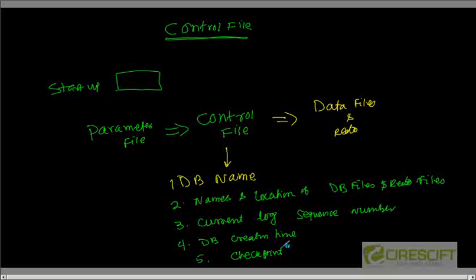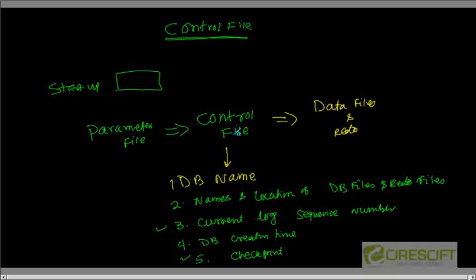You may not be aware of items three and five right now, so don't worry. We are going to explain those when we discuss checkpointing and log switch. But essentially, the control file contains these five pieces of information. The control file is a binary file — we cannot read it, but Oracle can.